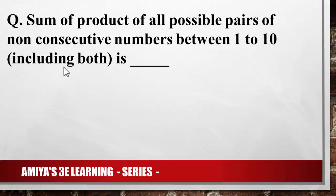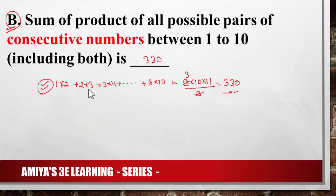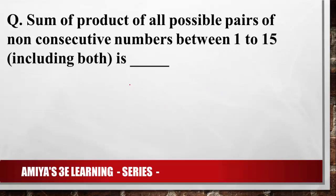So the answer to A is 1320, answer to B is 330, and our main question — non-consecutive pairs — is 1320 − 330 = 990. We solved all three questions: question A uses the sigma formula, question B uses the consecutive product series giving 330, and the main answer is total minus consecutive = 990. For homework, try the same problem with 1 to 15 instead of 10. Thank you and happy learning!